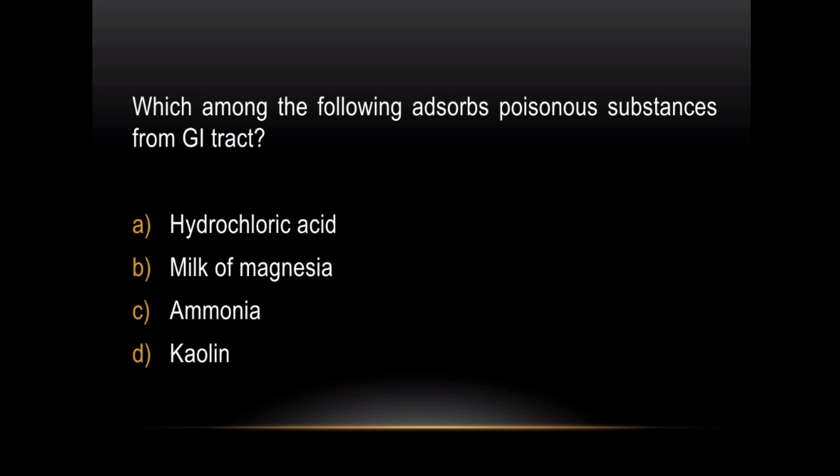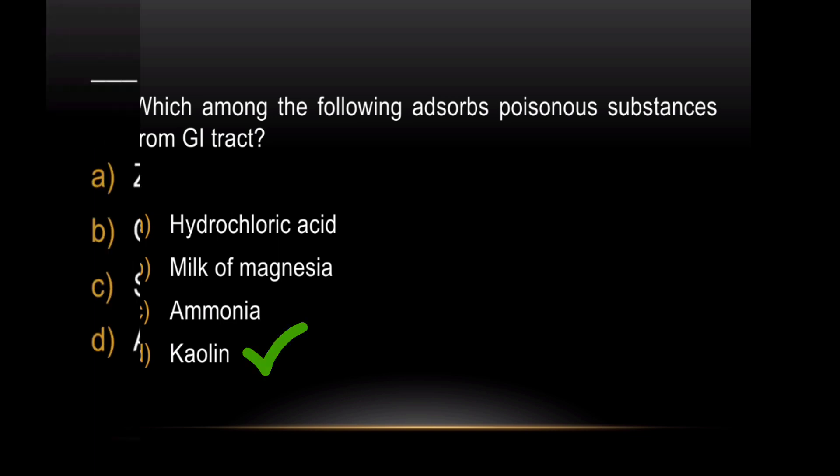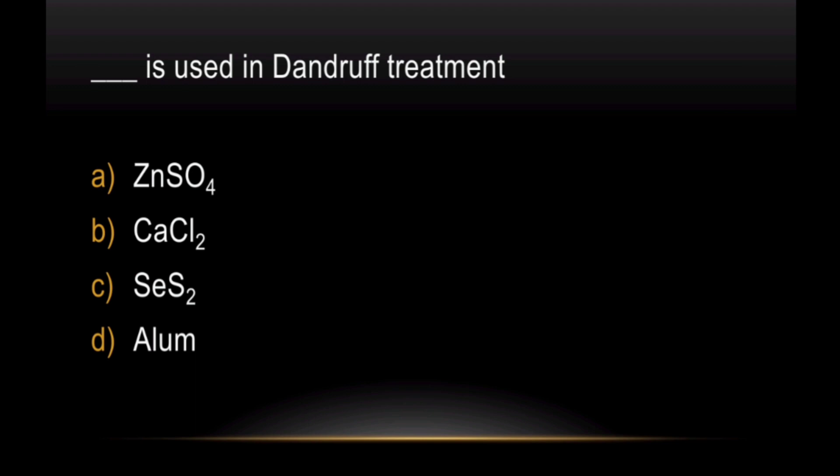Question: Which among the following absorbs poisonous substances from the GI tract? The answer is Kaolin. Question: What is used in dandruff treatment? Very important and easy question — the answer is Selenium Sulphide.